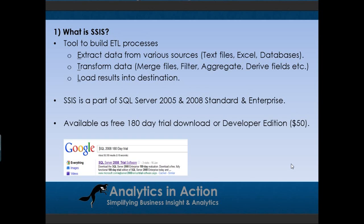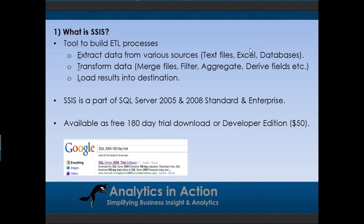The T part of the ETL is about transforming data. This involves things like merging a couple of different data sets together based on a common key, or filtering data such as filtering customers down to a particular segment. It could also involve an aggregate — so summing or counting data — or derived fields where you calculate something like a customer subscription renewal date minus 30 days. Once you've done the extracting and transforming, you then load the data into a destination, such as a shared folder where people in another team can access the data.